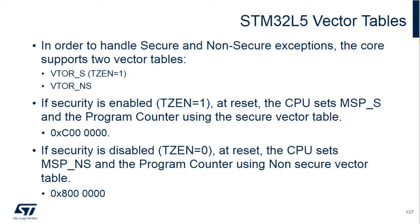As we know, depending on whether the TrustZone enabled bit is set or unset, there's either one or two vector tables. When the TrustZone is enabled, we have dual vector tables and the CPU and the memory stack pointer are set for the secure memory, which is at 0xC00000 — we saw that in hands-on two and three on both secure sides. When the TrustZone enable is not set, this boots just like a normal STM32 Cortex device, which is at 0x800000, with only a single stack pointer and one vector table.